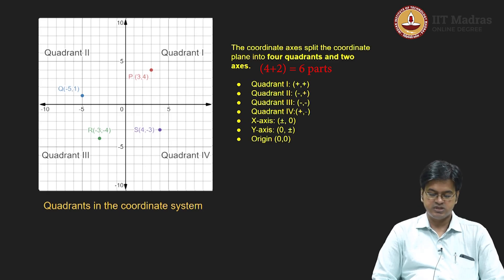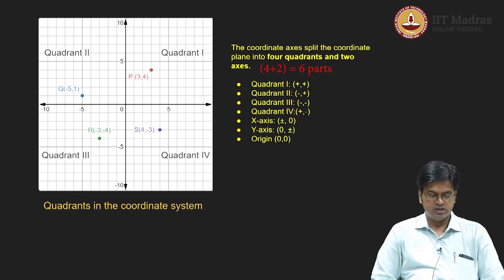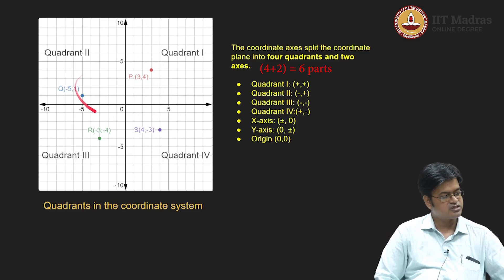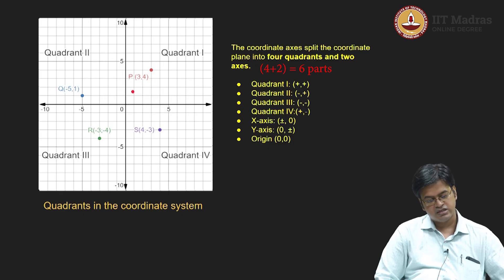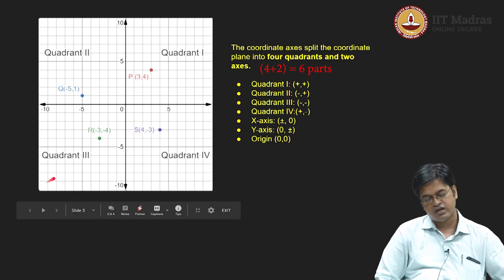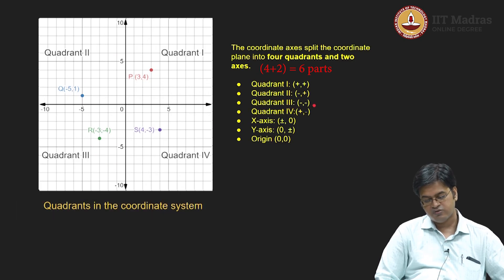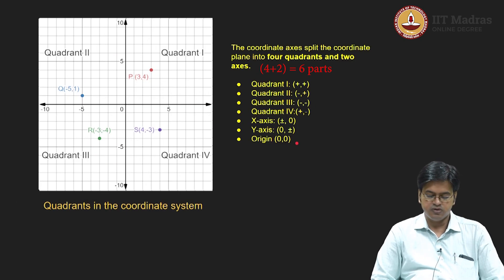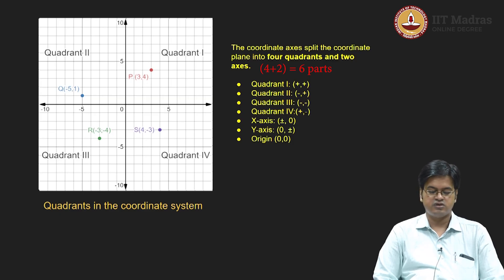Why is the quadrant system helpful? Sometimes you are given several points to plot. Those points, if you look at them closely, need not be distributed equally — you may have many points in quadrant 1. In that case, you can scale accordingly: bring the axes to the bottom right corner or bottom left corner and just focus on quadrant 1. So if you have a good understanding of quadrants, you may be able to graph functions and points better. That is why the coordinate system is important. This ends our discussion on coordinate system.